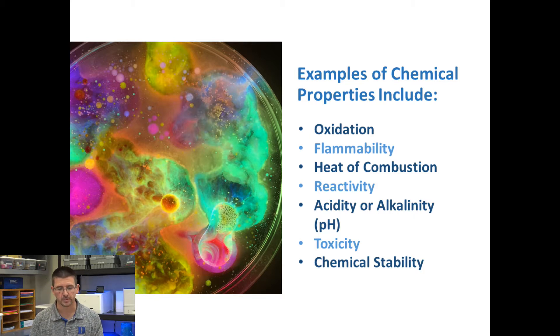Things like heat of combustion, reactivity, pH, toxicity, chemical stability, these are all other examples of chemical properties that substances can have.